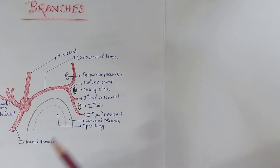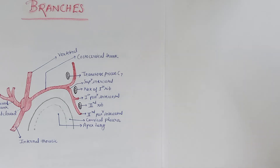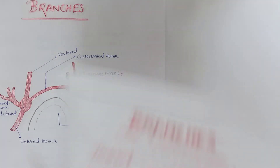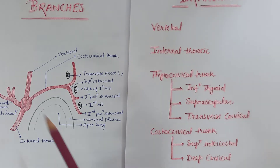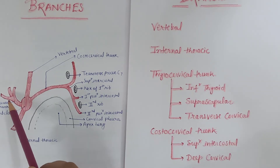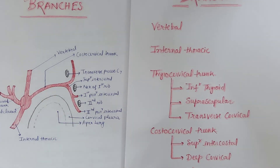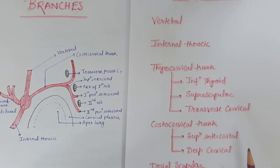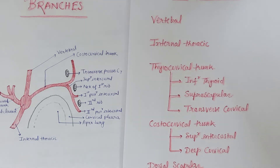In this diagram we can see the subclavian artery with the apex of the lung and cervical pleura. From the subclavian artery arise the vertebral artery, internal thoracic artery, thyrocervical trunk, and costocervical trunk. Branch number one is the vertebral artery, number two is the internal thoracic artery, number three is the thyrocervical trunk, number four is the costocervical trunk, and occasionally the dorsal scapular artery.